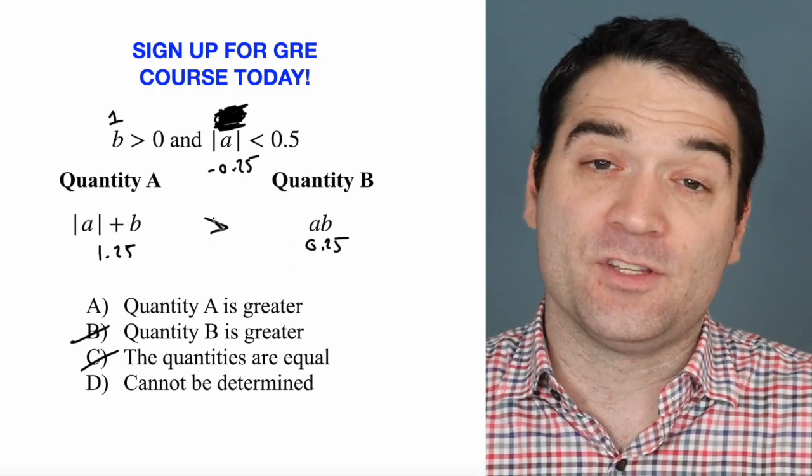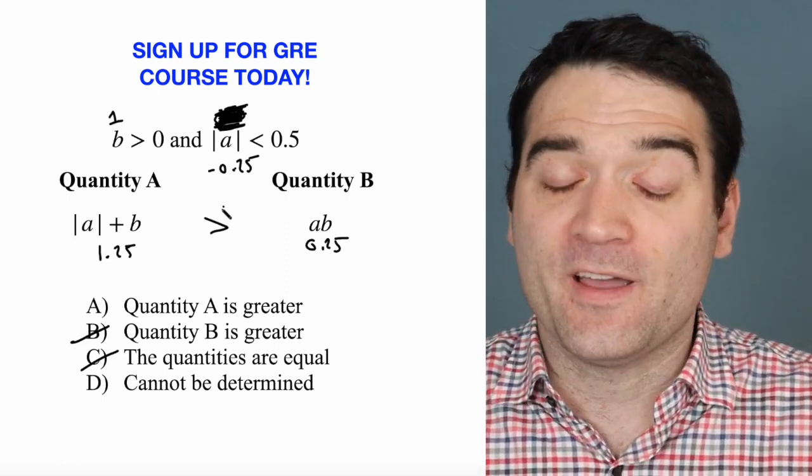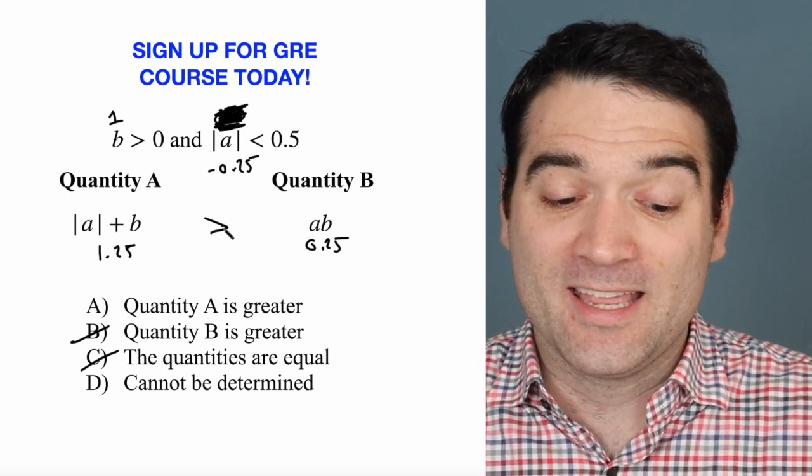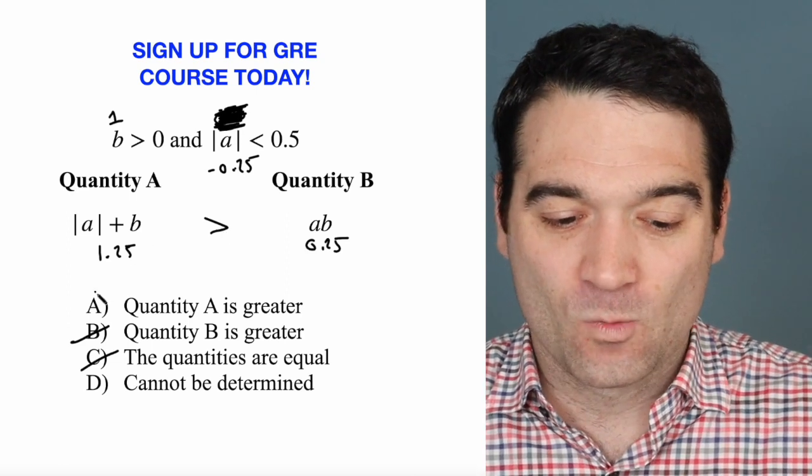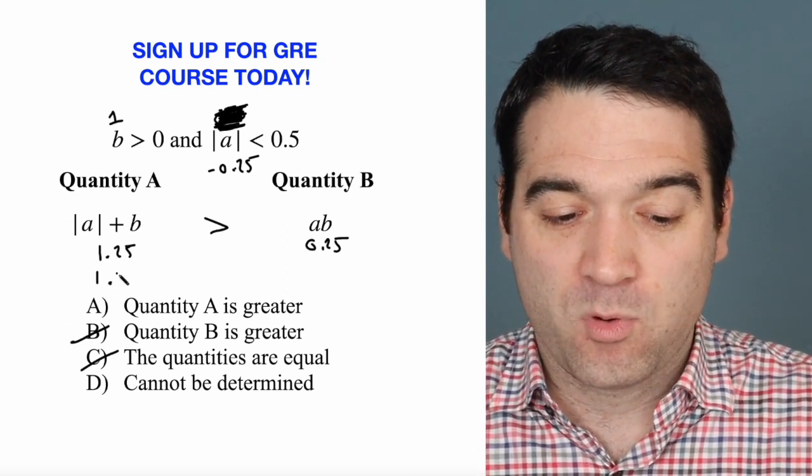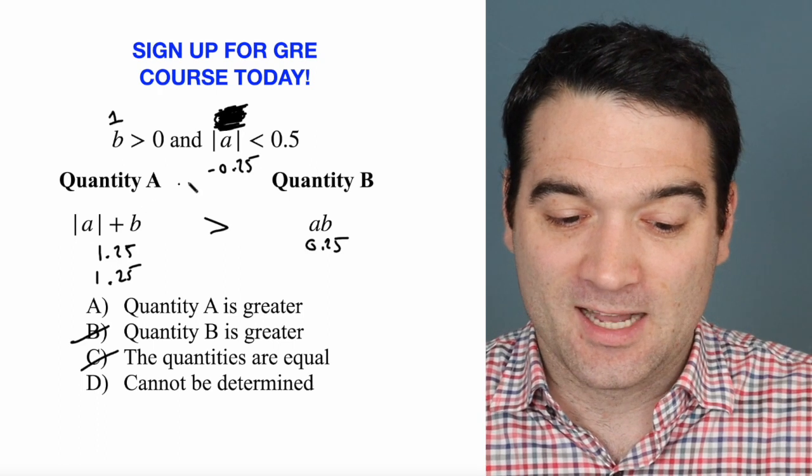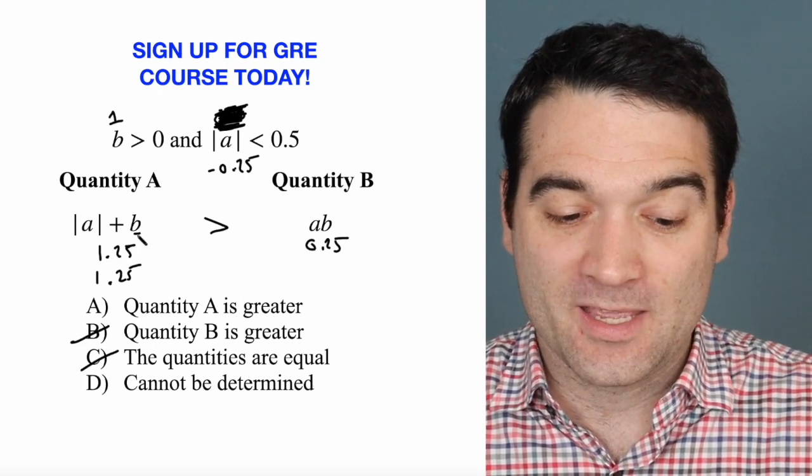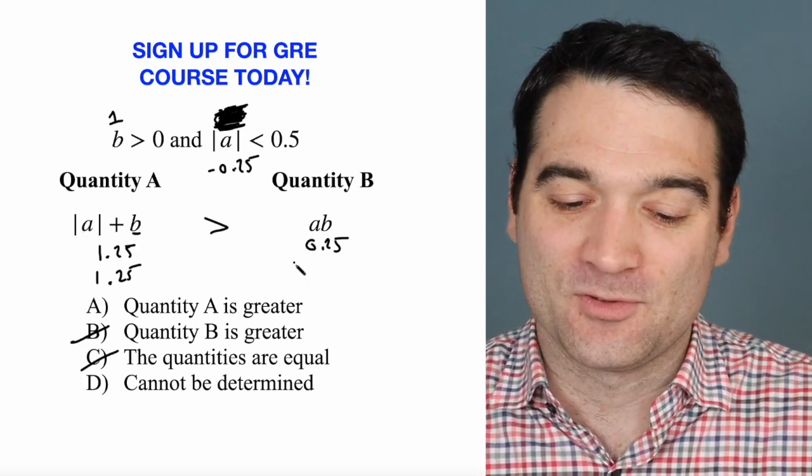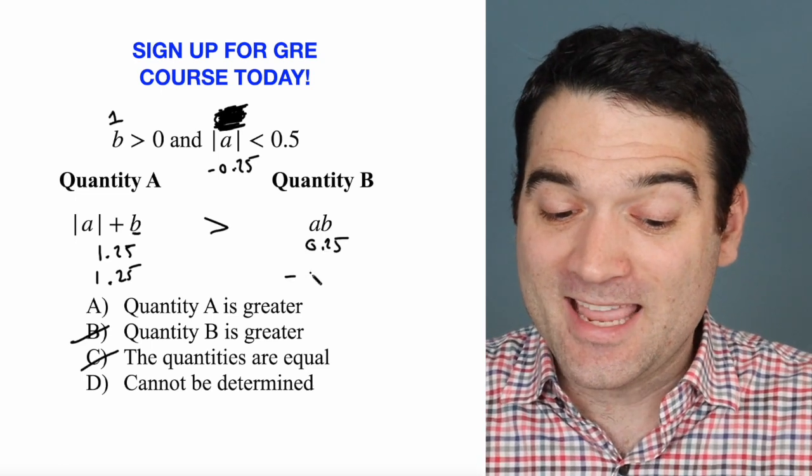Let's make A negative 0.25. Well, the absolute value of negative 0.25 is 0.25. So once again, we get 1.25. That's 1 for B plus 0.25 for the absolute value of A. And over here, we get negative 0.25.